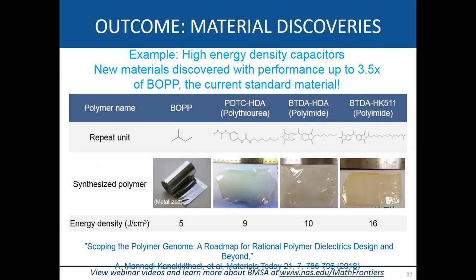Another outcome is actual materials discovery. Using our screening capability, we have been able to identify polymers that were then made in the lab, validated, and tested. The leftmost picture shows a currently used material for energy storage with an energy density of 5 J/cc, while the three new materials we developed through this program achieve about two to three times that value. It's very rewarding to see this work translated to materials realized in the lab.